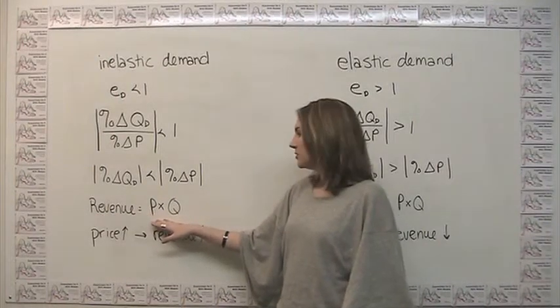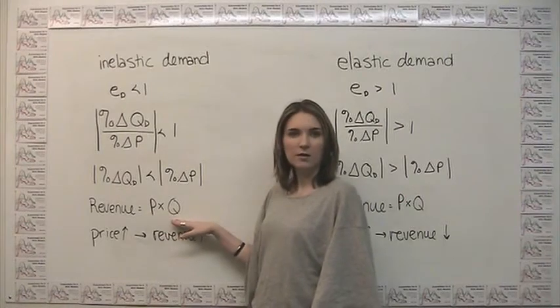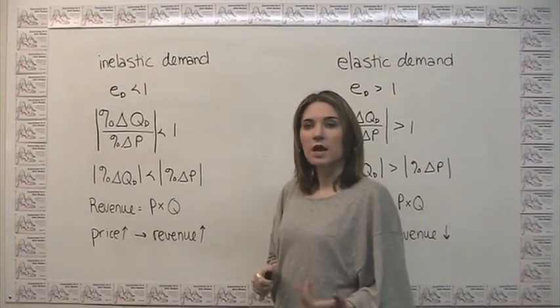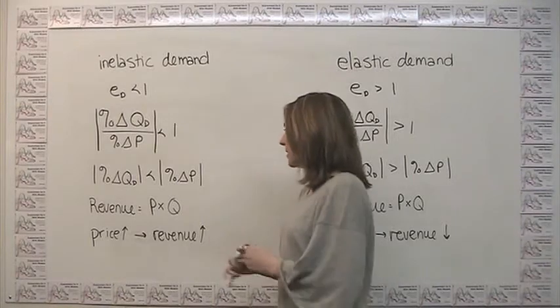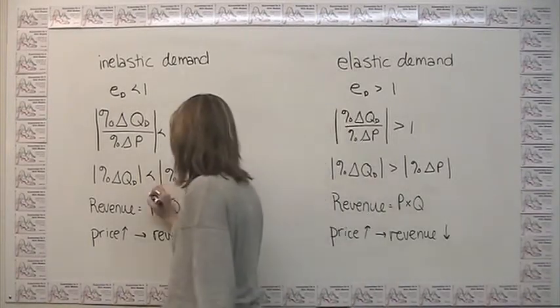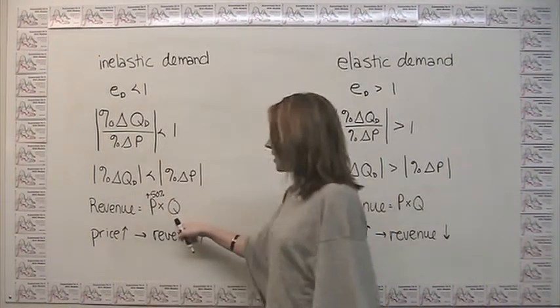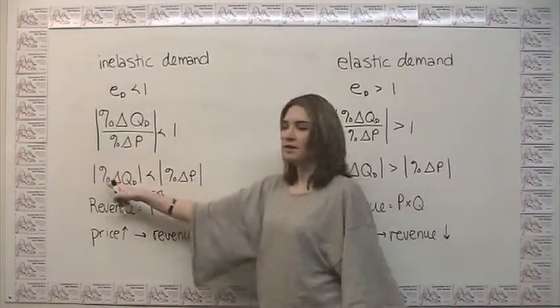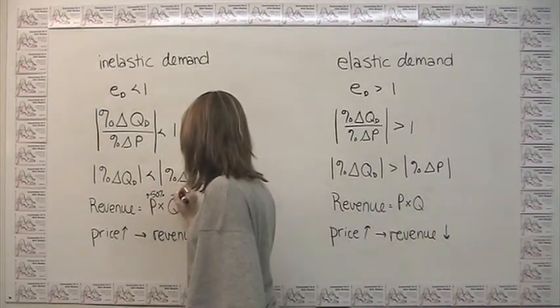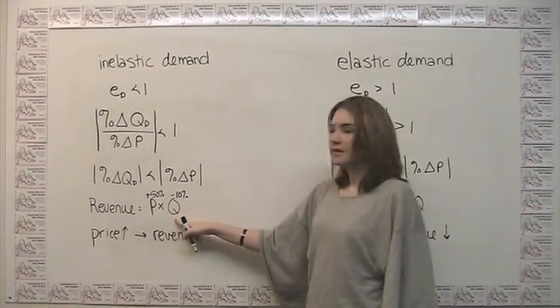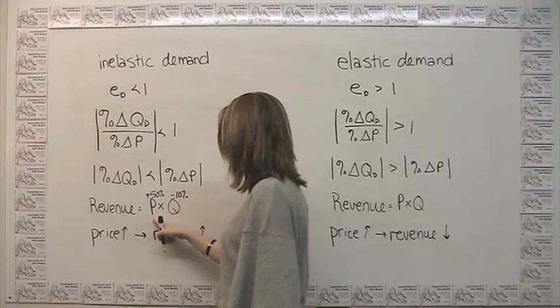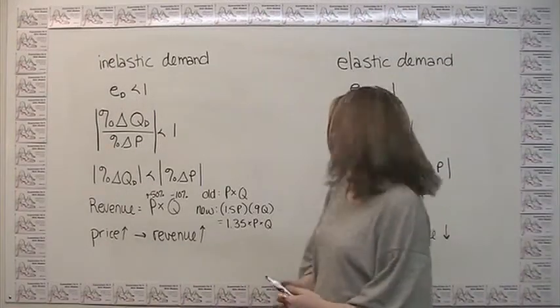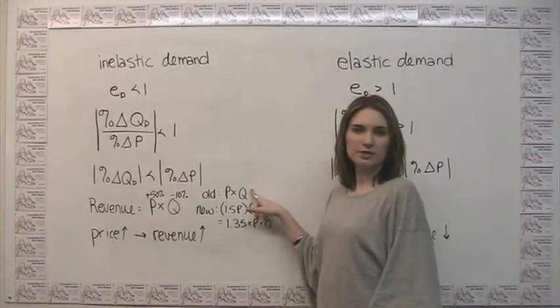Now, as we just said, our revenue is equal to our price times our quantity. So let's think about what happens to revenue in response to a change in price. Taking the example that I just described, say we had our price going up by 50%, but we had our quantity only going down by 10%. That was an example of this situation here with inelastic demand. But we can see in this situation that our old revenue is going to be smaller than our new revenue. More specifically, we can say that our old revenue was just some arbitrary price times quantity.